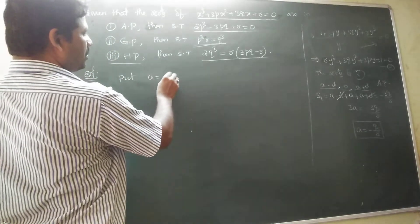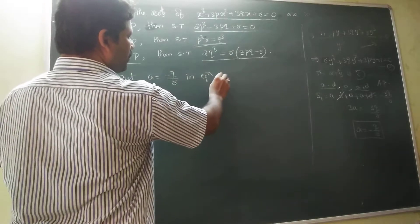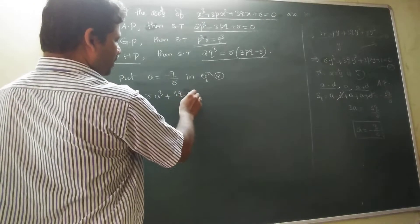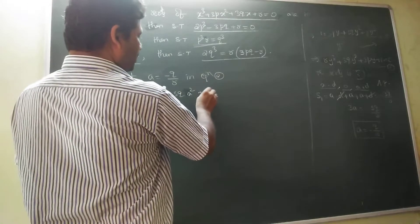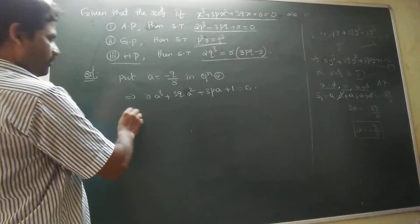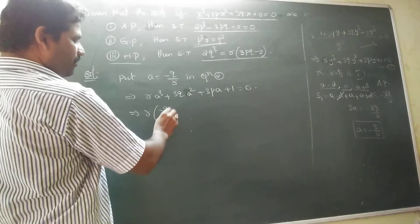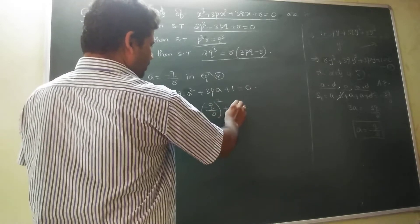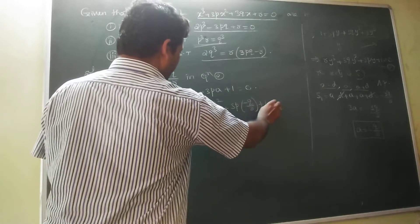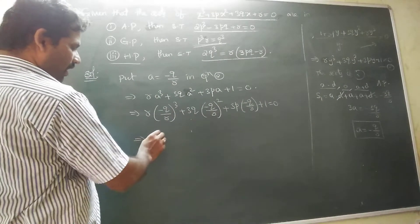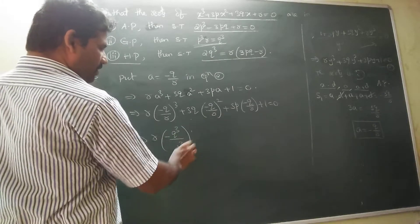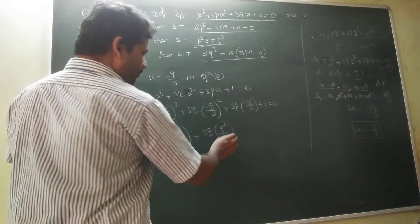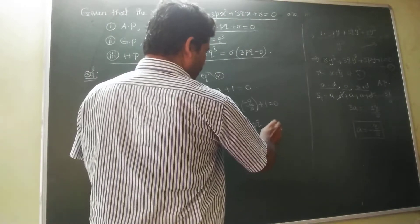Put A equal to minus Q/R in equation 2. So R times A³ plus 3Q times A² plus 3P times A plus 1 equal to 0. Substituting: R into (minus Q/R)³ plus 3Q into (minus Q/R)² plus 3P into (minus Q/R) plus 1 equal to 0.